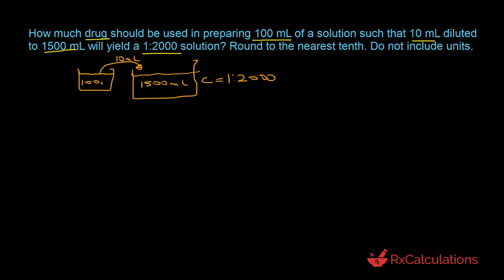I'm going to start with a physical representation of what's happening. You have a 100 milliliters solution and you want to find out how much drug to put in so that when you take out 10 milliliters and make a larger mixture of 1500 milliliters, the resultant concentration is 1 is to 2000. The strategy is to first determine how much drug is actually in the 1500 milliliters solution.